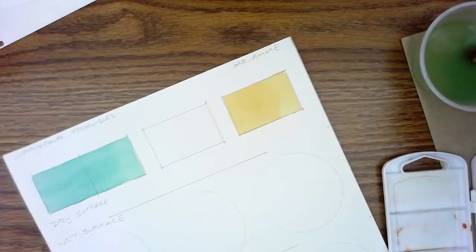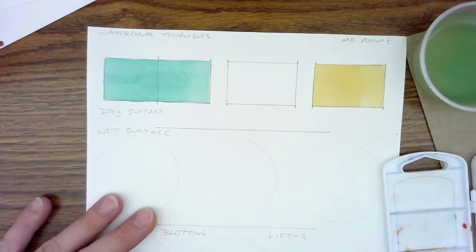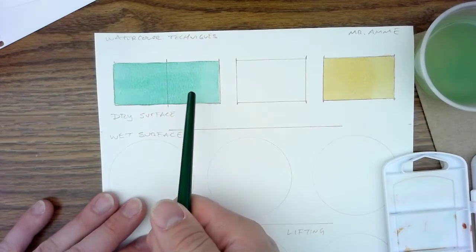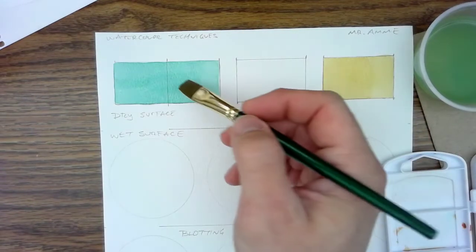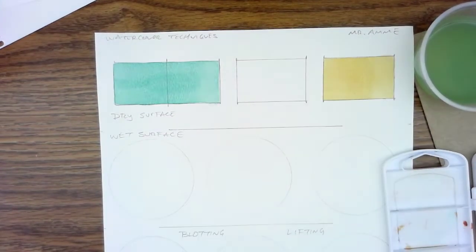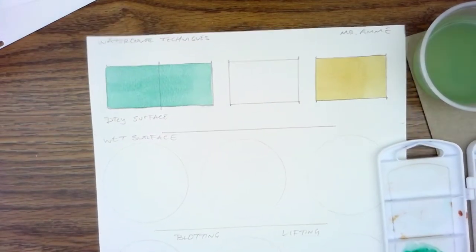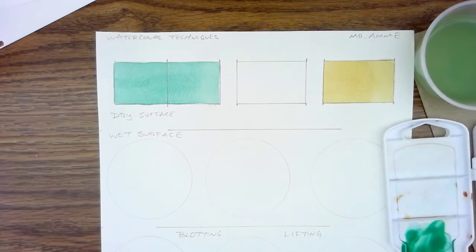Watercolor is transparent. It creates that luminous glow from the white of the paper showing through. So if I come into this section here with a similar color, I'm going to come back to my green and the blue, and I'm going to go in with a second layer and maybe a little bit more pigment.